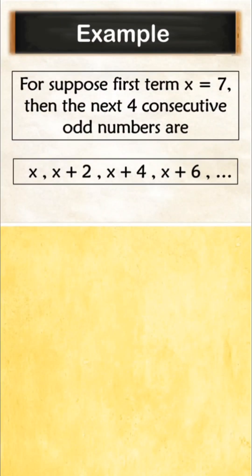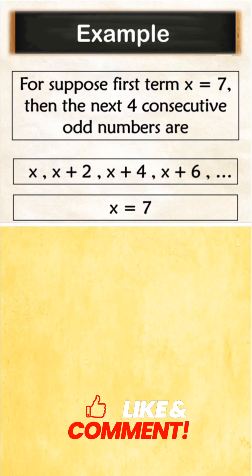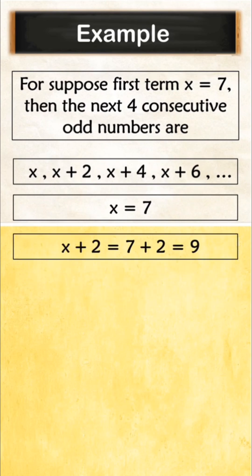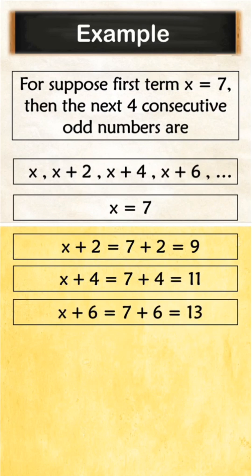Now let us see one more example. Suppose the first term x=7. Then find the next 4 consecutive odd numbers. This is the general form. x=7, so substituting: 7+2=9, next 7+4=11, 7+6=13, 7+8=15. So you got the next 4 consecutive odd numbers.